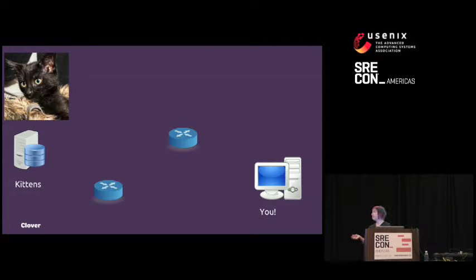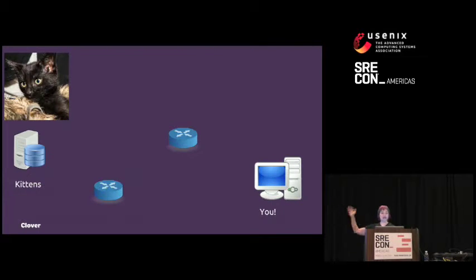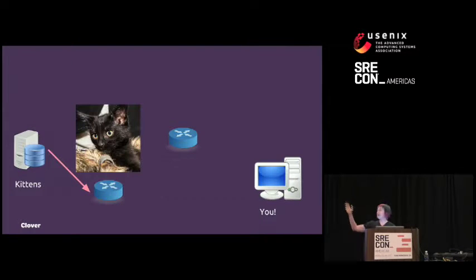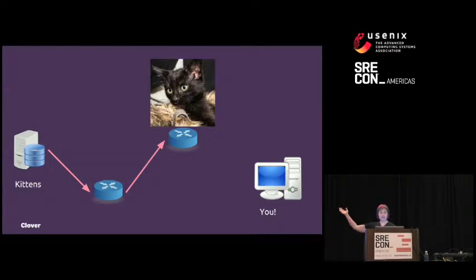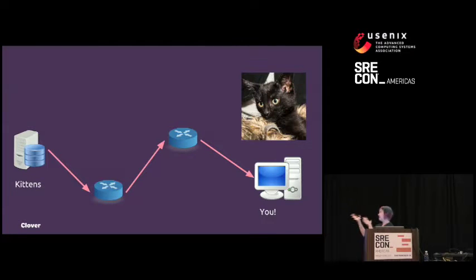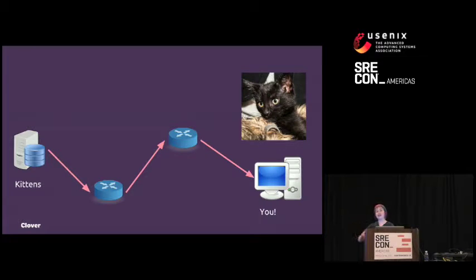Most of us know the basic theory. A server is hosting a picture of my friend John's kitten. The kitten moves from one network to another and another. Eventually, I get my kitten fix. But those little networks are hiding a lot of complexity.